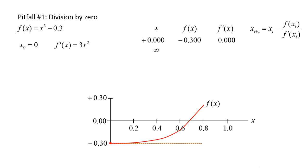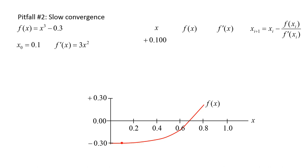Division by zero is possible any time you have a root estimate which yields a first derivative equal to zero. If we try a slightly different initial guess and set x0 equal to 0.1, the value of the function is negative 0.299 and the value of the first derivative is positive 0.03. Since the slope is non-zero it will eventually cross the x-axis. However, the slope is very small and the next root estimate will be quite far from the actual root. Plugging these values into the Newton-Raphson equation gives us 10.07 for the next root estimate.